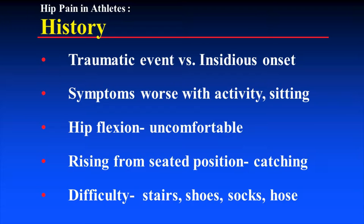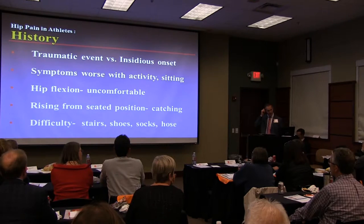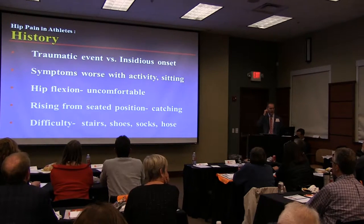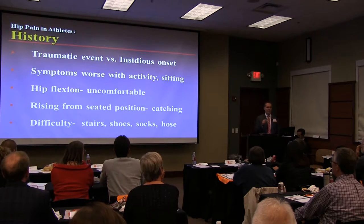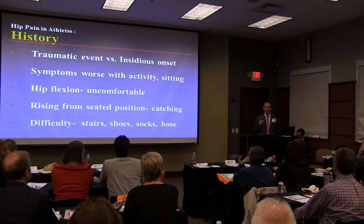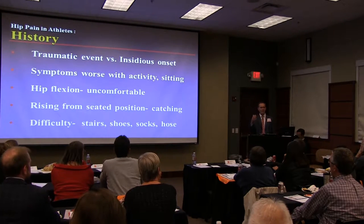Insidious onset: this is the 40-year-old female who just had her second child, started an exercise program to lose the baby weight, and now she's starting to have groin pain, can't sleep, and can't sit in a car for more than 10 minutes. She describes that classic C sign we've heard about. Symptoms get worse with activity and sitting — it used to bother her running 10 miles, then 5, then 2; now she can't walk or sit or sleep. That's the progression of FAI, femoroacetabular impingement, and labral tears.